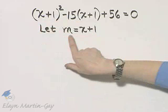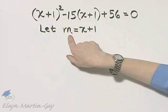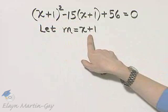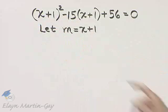I'll let m, or any other letter of the alphabet beside x, be x plus 1, this binomial that continues to appear.